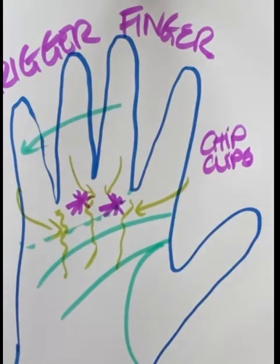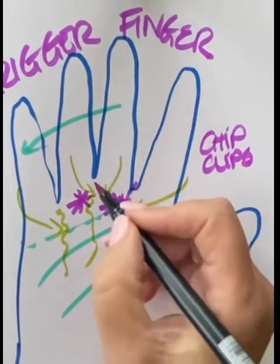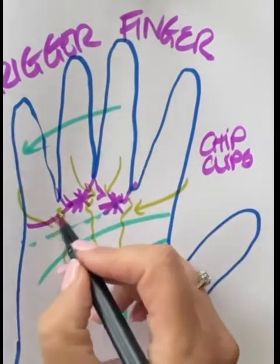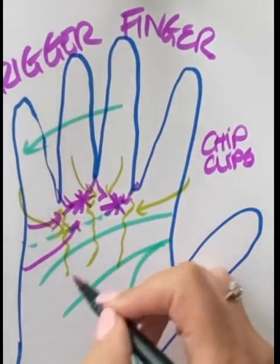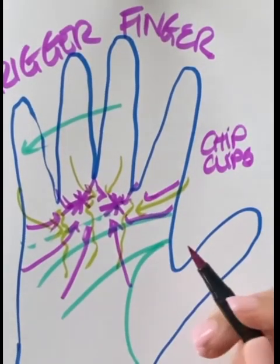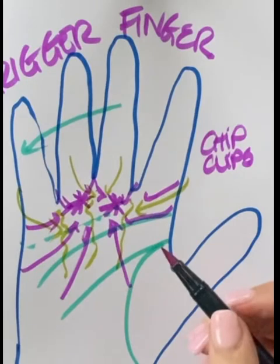And then we also have the skin that kind of comes through the web spaces, like this, all the way getting pulled in towards these locations like that. And then again, they're cupping their hand, everything's pulling in.